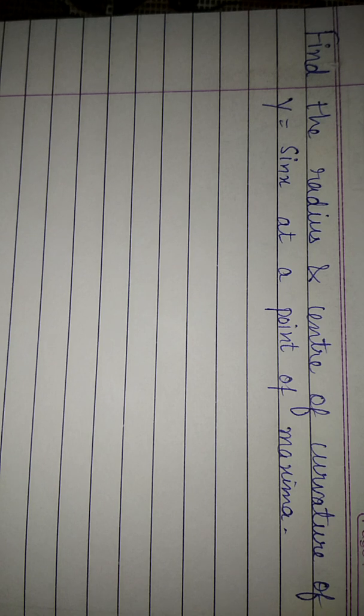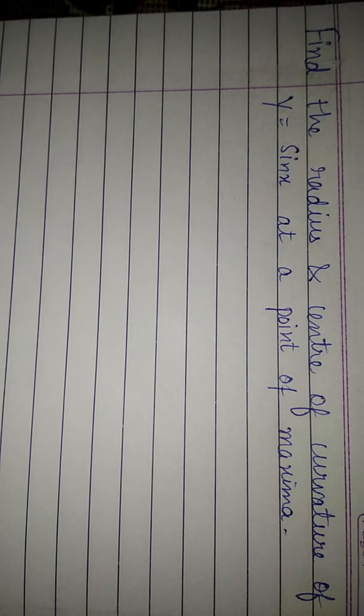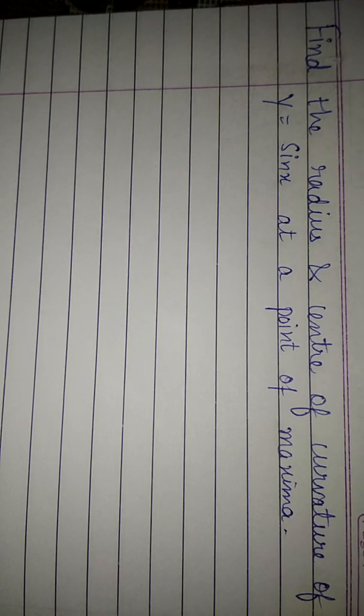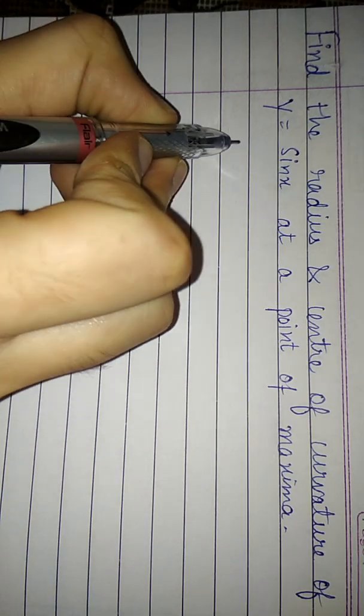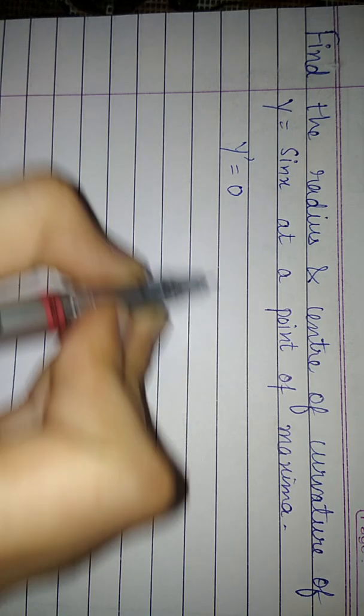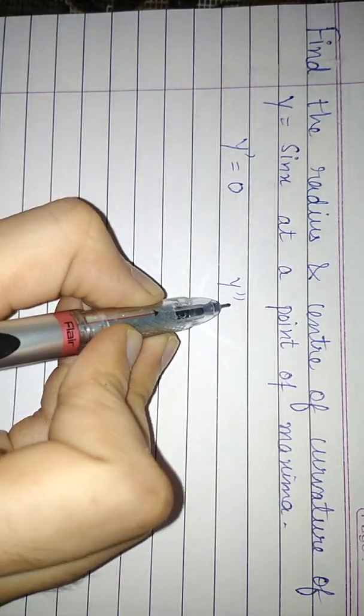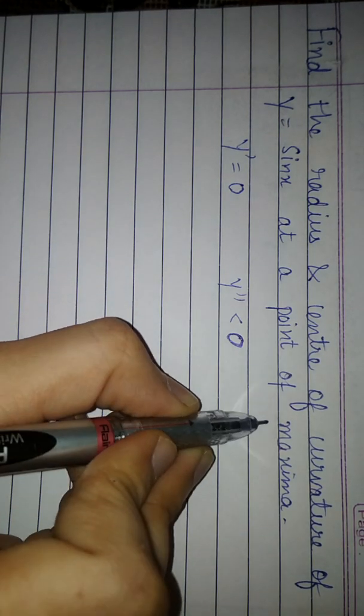So to find a point at maximum, what we need is first derivative and second derivative of the given curve. And the first derivative, that is y', must be equal to 0 and second derivative y'' must be less than 0 for point of maximum.